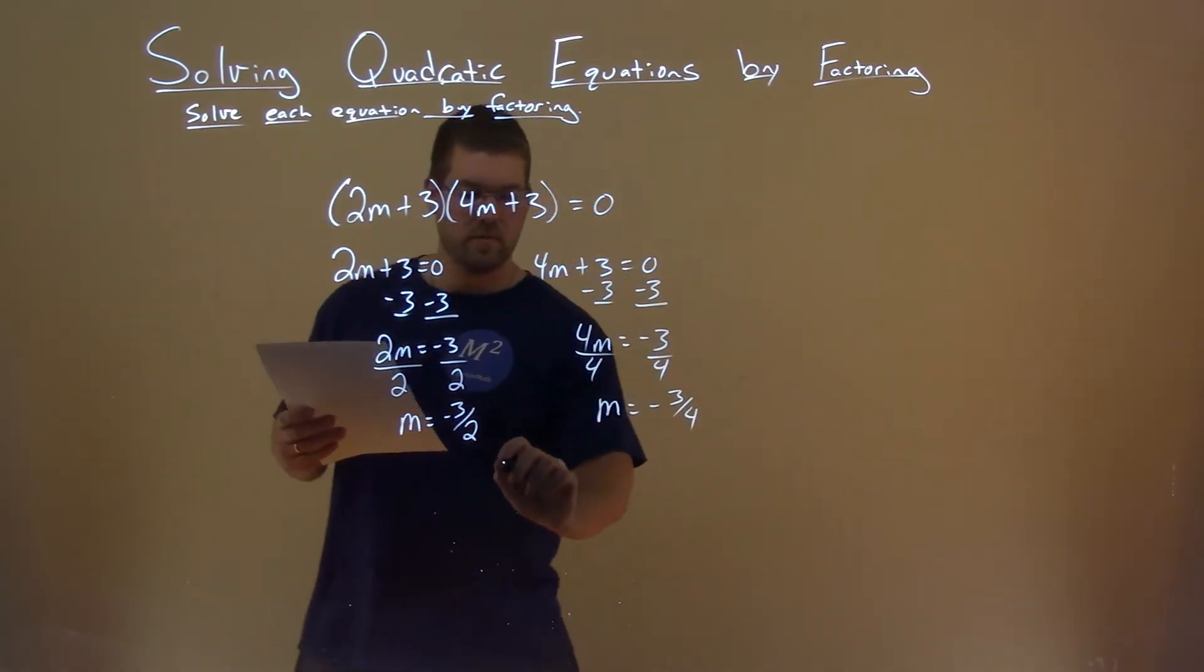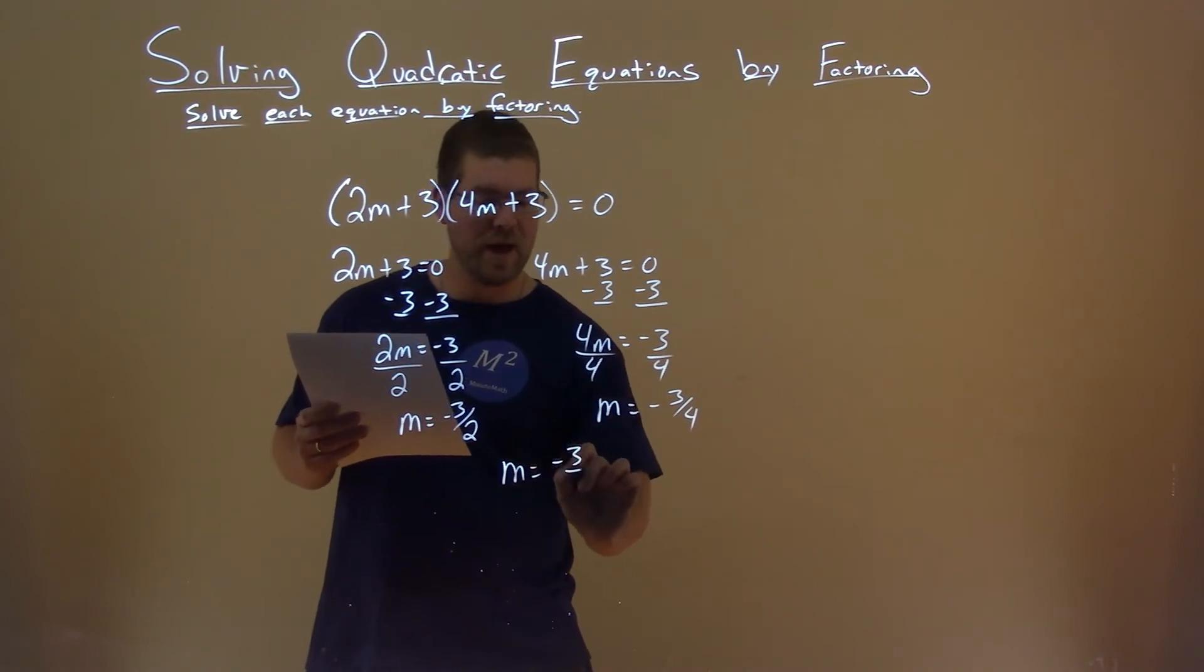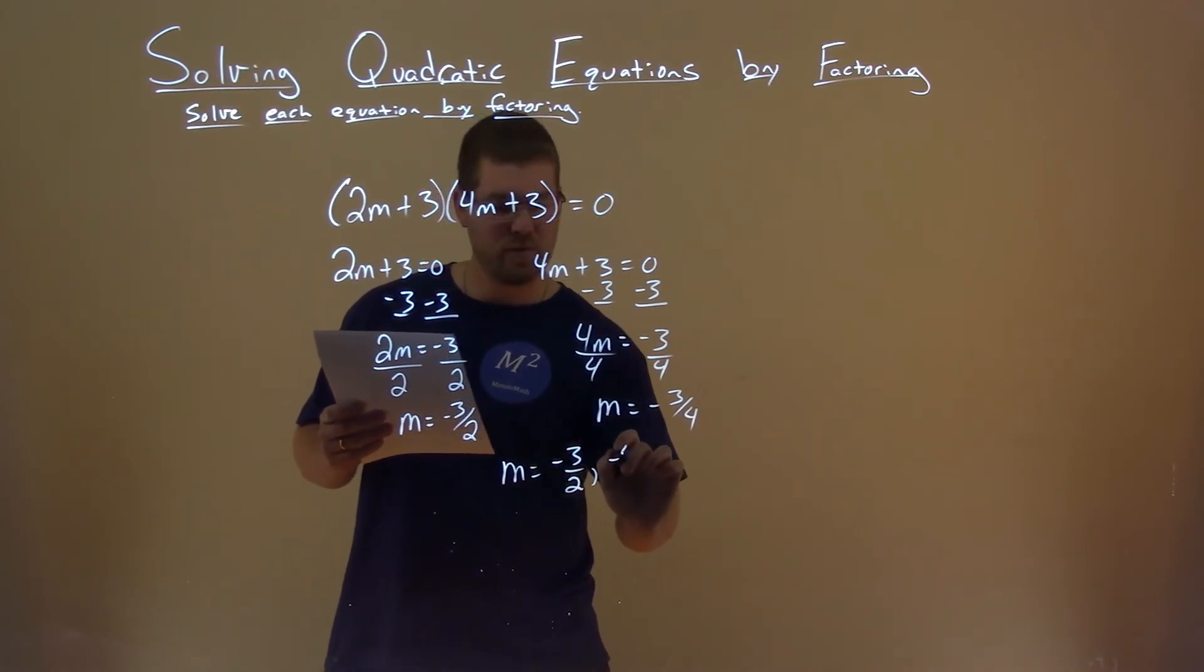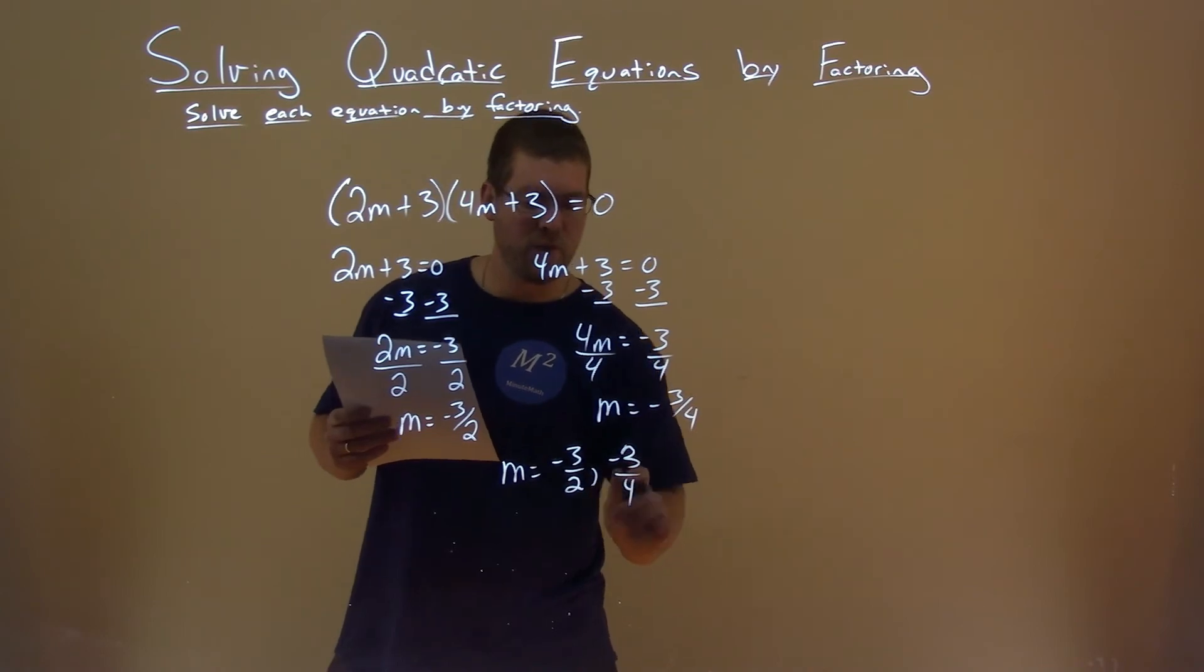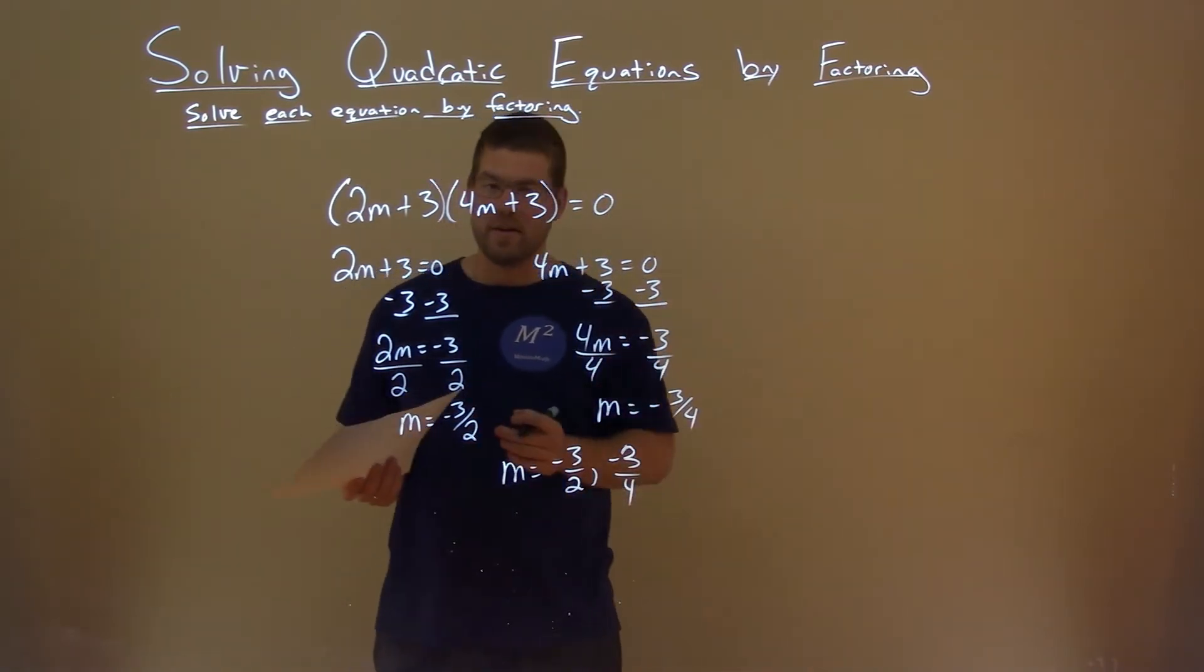And so we can combine the two, and m equals negative 3 halves, as well as negative 3 fourths, and that is our final answer.